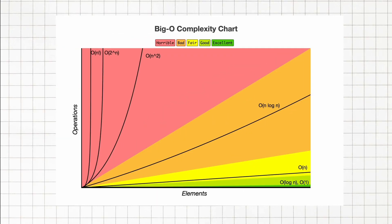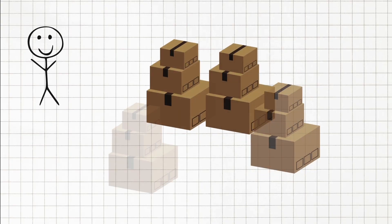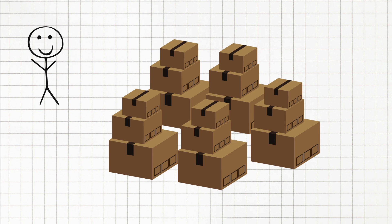Let's look at all types of time complexities that we have on this chart. Imagine you're in a room with a hundred boxes, and your task is to find a specific item.